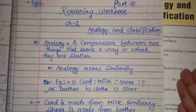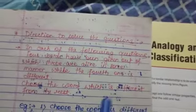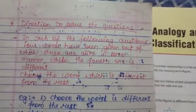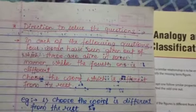Direction to solve the question. In each of the following questions, four words have been given out and three are alike in some manner while the fourth one is different. Choose the word which is different from the rest. First, we have to identify which property is similar to the rest, then identify the fourth one that is different and classify it.